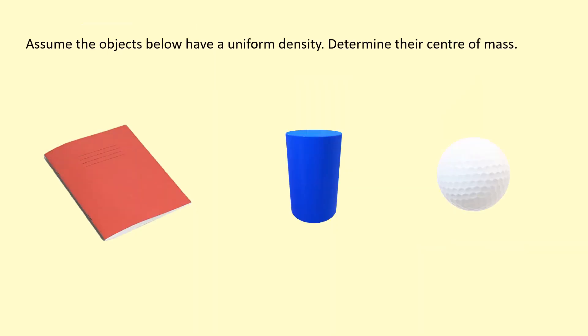To work with. In these examples, we're going to assume the objects have uniform density. What does that mean? That means the mass is evenly spread out across the object. For example, a centimeter squared over here has the same mass as a centimeter squared over here.